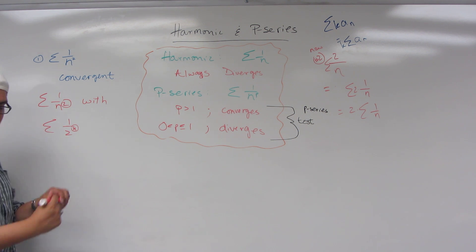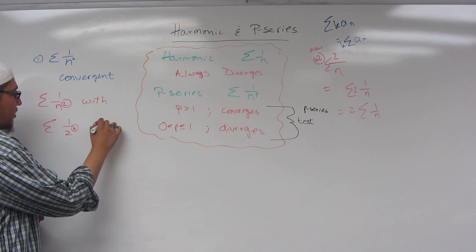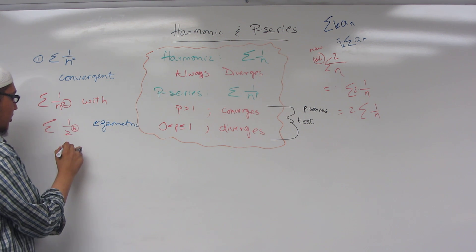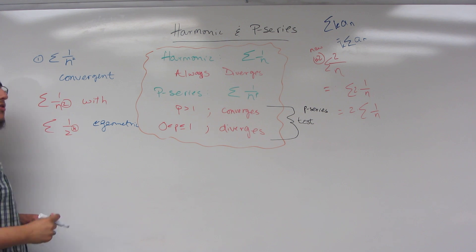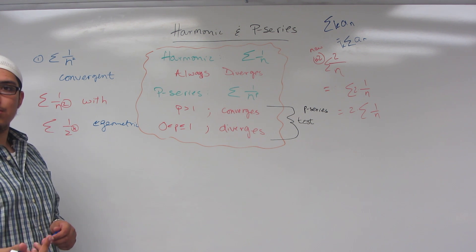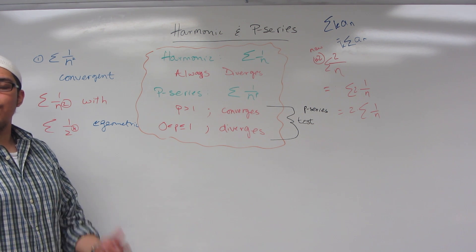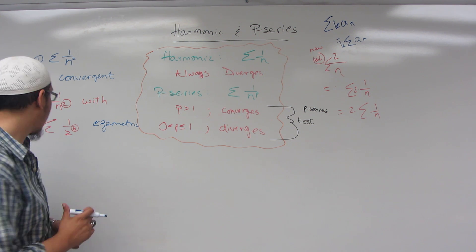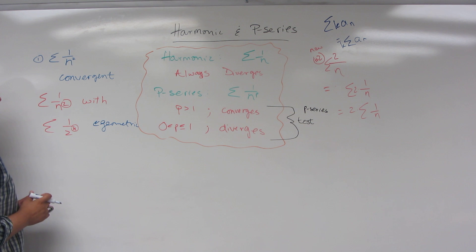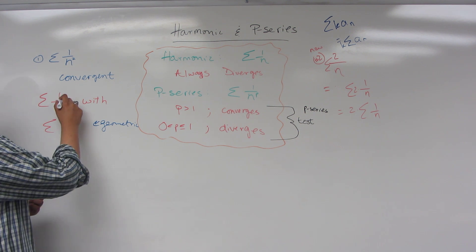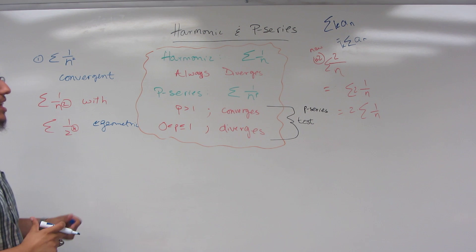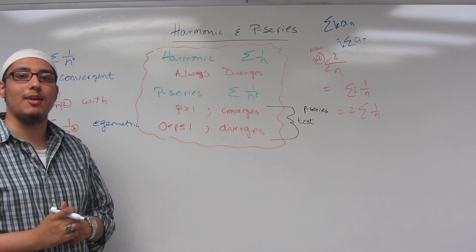this one has a constant as its power. This one has a variable term as its power. Again, the bottom one is a geometric series because this is simply r to the n. One over n squared is a p series because it has a constant exponent in its denominator.